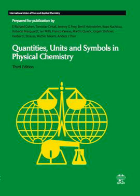A Japanese translation of the third edition of the Green Book (ISBN 978-4-06-154359-1) was published in 2009. A French translation of the third edition (ISBN 978-2-804-1-7207-7) was published in 2012. A concise four-page summary of the most important material in the Green Book was published in the July–August 2011 issue of Chemistry International, the IUPAC News Magazine.